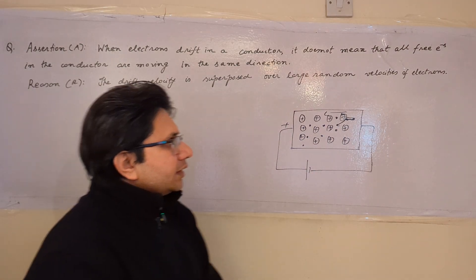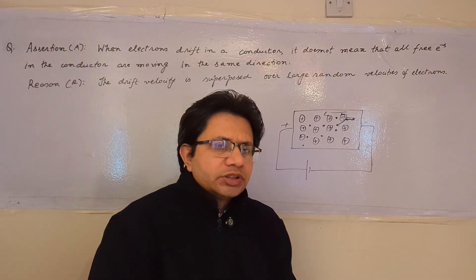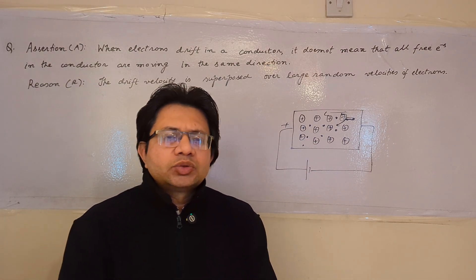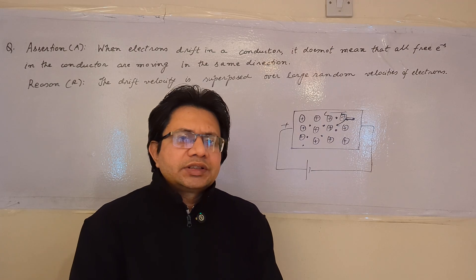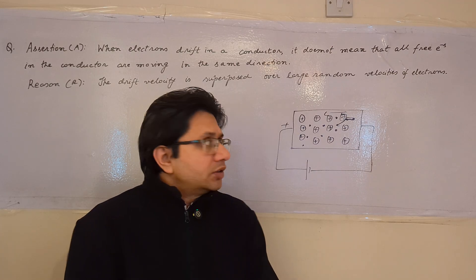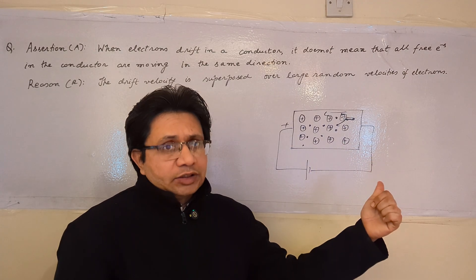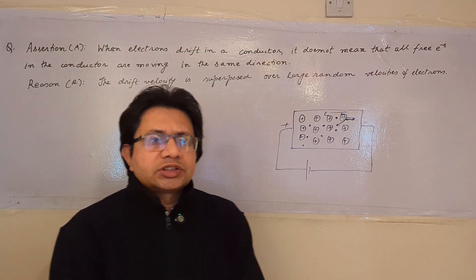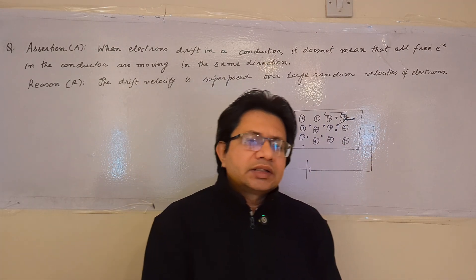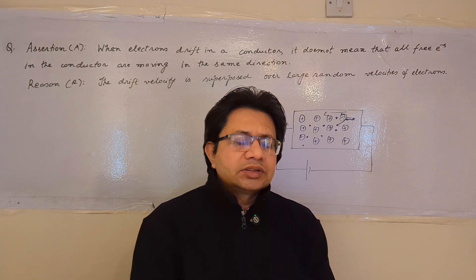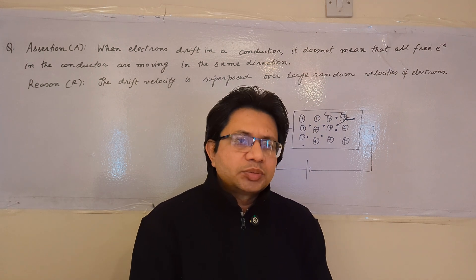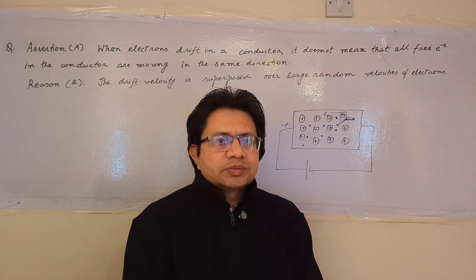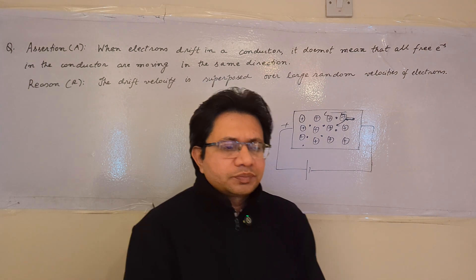The reason is correct and the assertion is correct. So we can say that option A is correct. Option A states that both the assertion and reason are correct, and the reason is the correct explanation of the assertion. I hope you understand the explanation. Thank you.